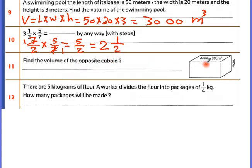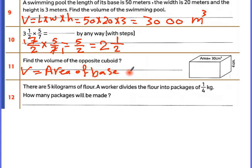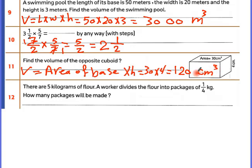Find the volume: volume equals area of base times height. So 30 times 4 equals 120 centimeters cubed.